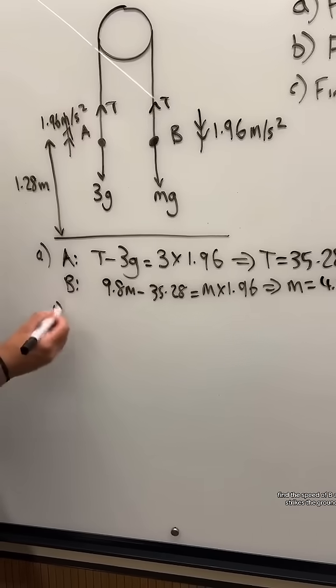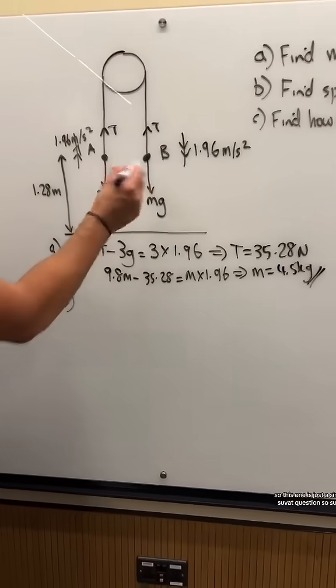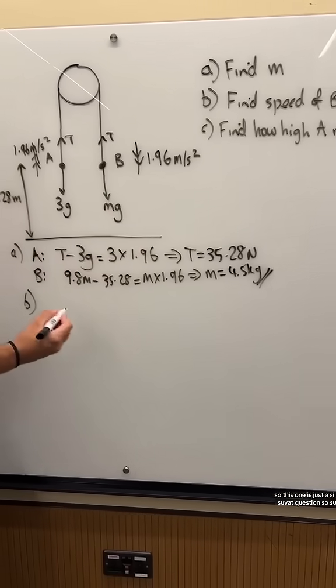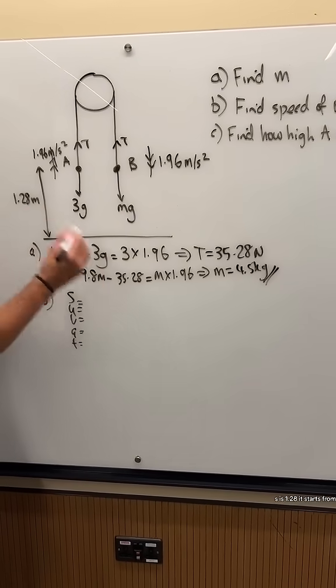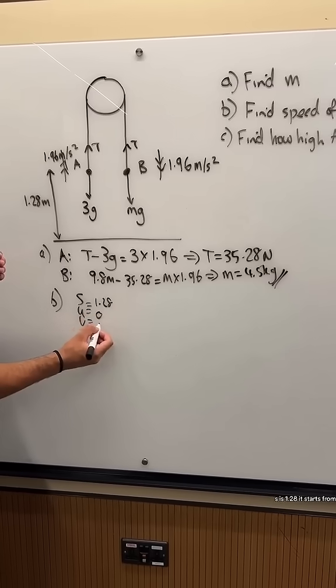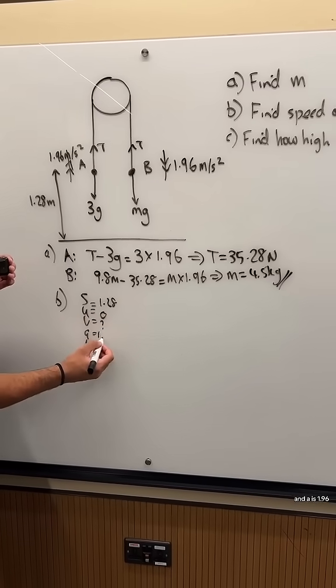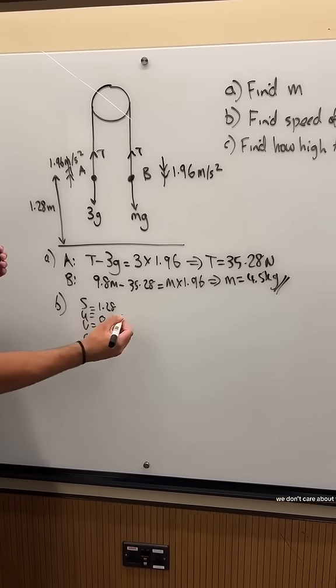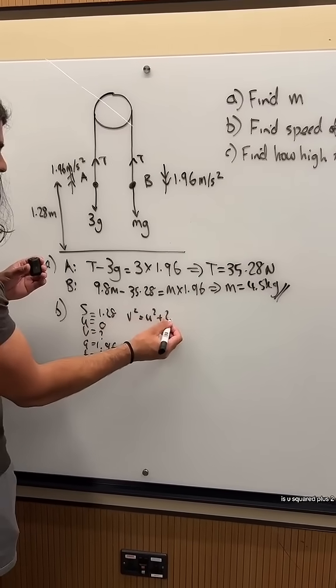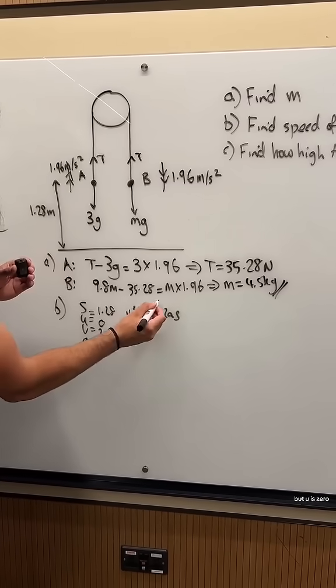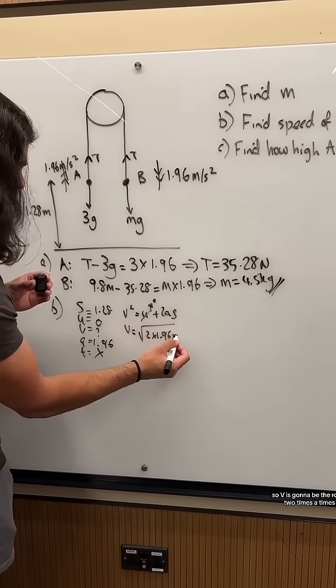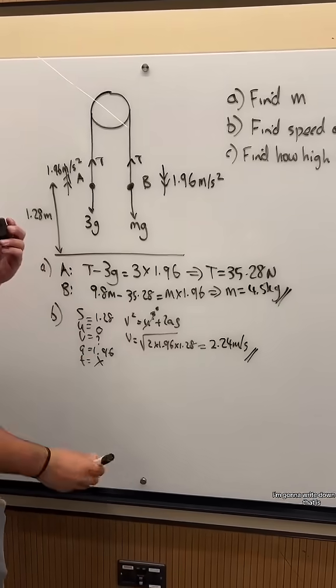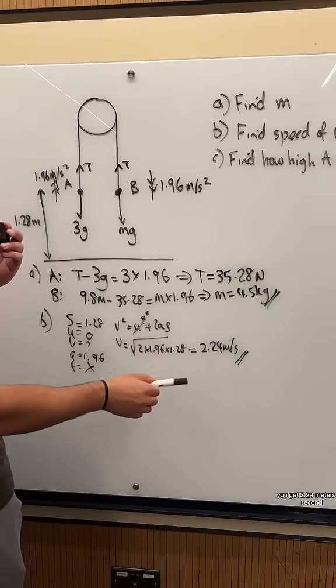All right, part B. Find the speed of B as it strikes the ground. So this one is just a simple SUVAT question. So SUVAT, S is 1.28, it starts from rest, we want to know what V is, and A is 1.96. We don't care about T. So this one's V squared is U squared plus 2AS, but U is 0. So V is going to be the root of 2 times A times S. I'm going to write down what that is. You get 2.24 meters per second.